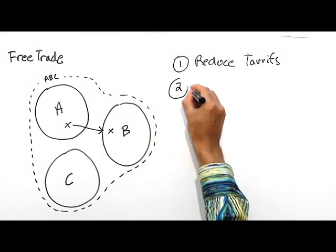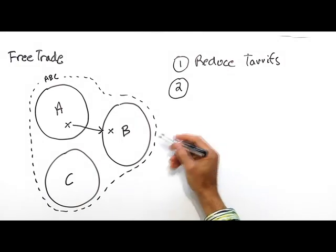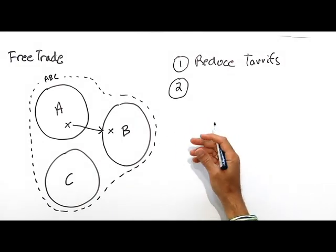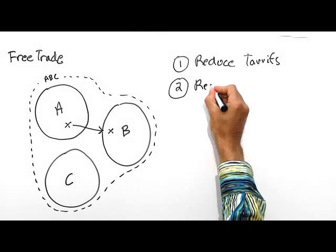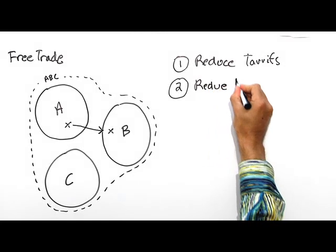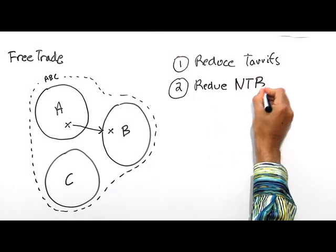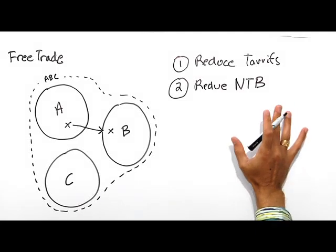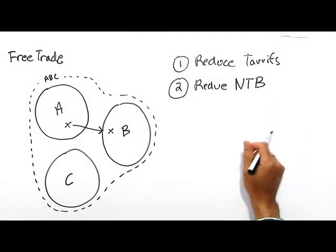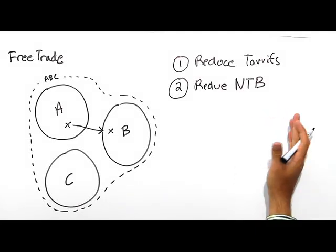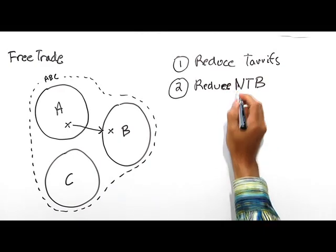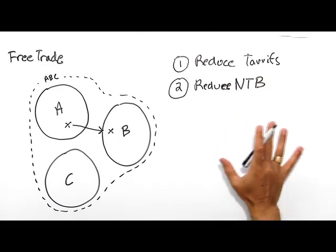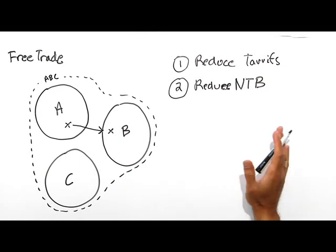The second way these countries can reduce trade barriers is to eliminate or reduce non-tariff barriers to trade. Non-tariff barriers are things like quotas, export subsidies, licensing requirements, and so on. If you can reduce those, then you will be in a situation where you will promote trade.